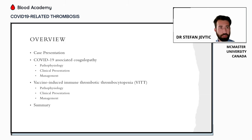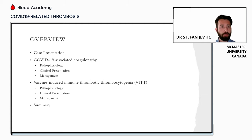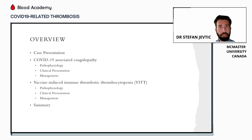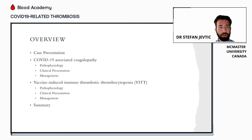Today I'm hoping to start with a case to highlight the complexity of these two presentations in the clinical setting. Then we'll review COVID-19-related coagulopathy, which is a unique viral infection-associated entity, how it presents, and what we know about its management. Then we'll move into vaccine-induced immune thrombotic thrombocytopenia, which is a separate unrelated entity to COVID-19 infection but has been linked to adenovirus vaccine-related events. Finally, we'll summarize both and return to our case.